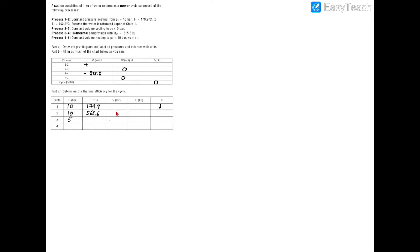Now I'm going to go through the properties table I just made and try to fill in everything I can. To find the change in internal energy delta U, I need to find each individual internal energy U. To find the work I need to find the volume. From there we can find the heat transfer, our cycle totals, and then the thermal efficiency. First I'll find the properties at state 1, where P1 equals 10 bar, T1 equals 179.9°C, and x1 equals 1.